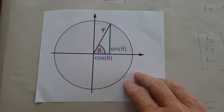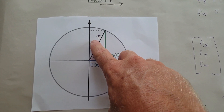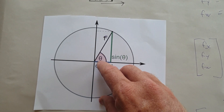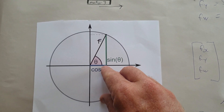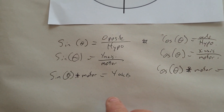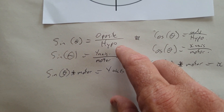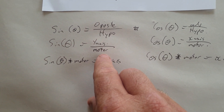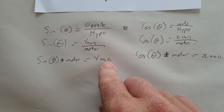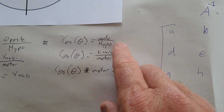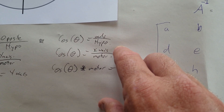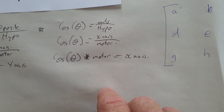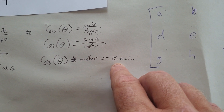A bit of revision of trigonometry: the sine of theta is opposite over hypotenuse, where the opposite is how much force is in the Y direction and the hypotenuse is how much force the motor is putting in. The cosine is the adjacent over the hypotenuse, where the adjacent is how much force is in the X axis. So sine theta multiplied by motor force equals the force on the Y axis, and cosine theta multiplied by motor force equals the force on the X axis.